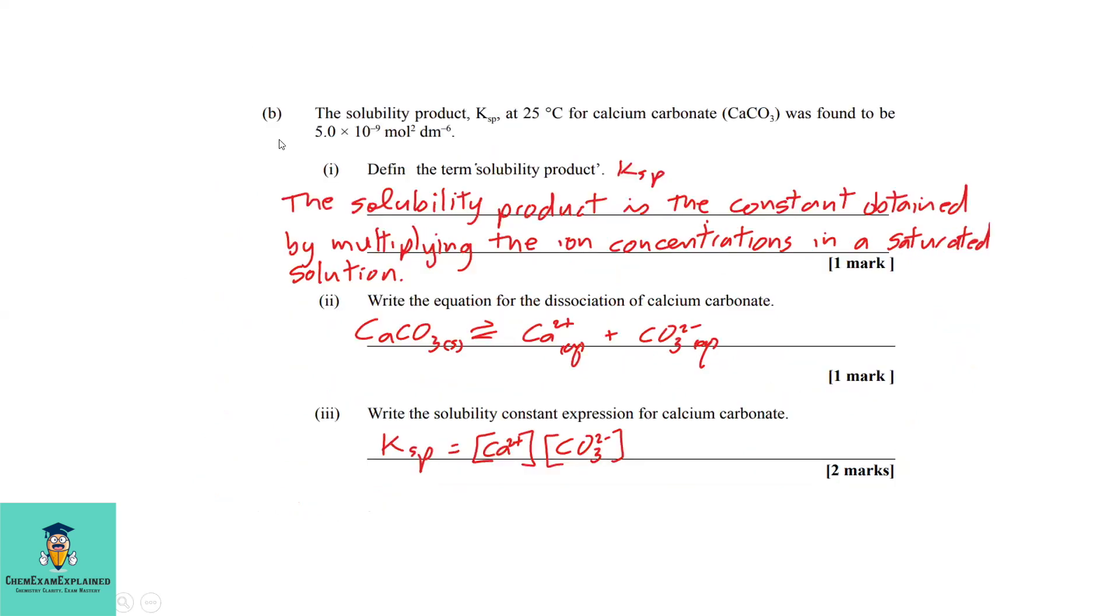Question 2b: The solubility product Ksp at 25°C for calcium carbonate was found to be 5.0 × 10⁻⁹ mol²/dm⁶. Part b1: Define the term solubility product Ksp. The solubility product is a constant obtained by multiplying the ion concentrations in a saturated solution.